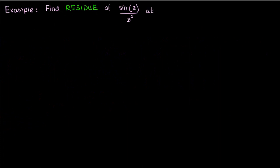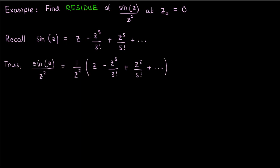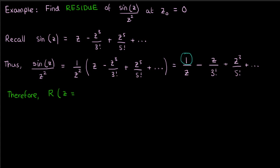In this example we want to find the residue of sine z over z squared at z0 equals zero. We know the Taylor expansion for sine z about z equals zero is z minus z cubed over 3 factorial plus z to the 5 over 5 factorial and so on. Dividing by z squared gives the Laurent expansion: 1 over z minus z over 3 factorial plus z cubed over 5 factorial and so on. So the residue at 0 is the coefficient of the 1 over z term, which is just 1.